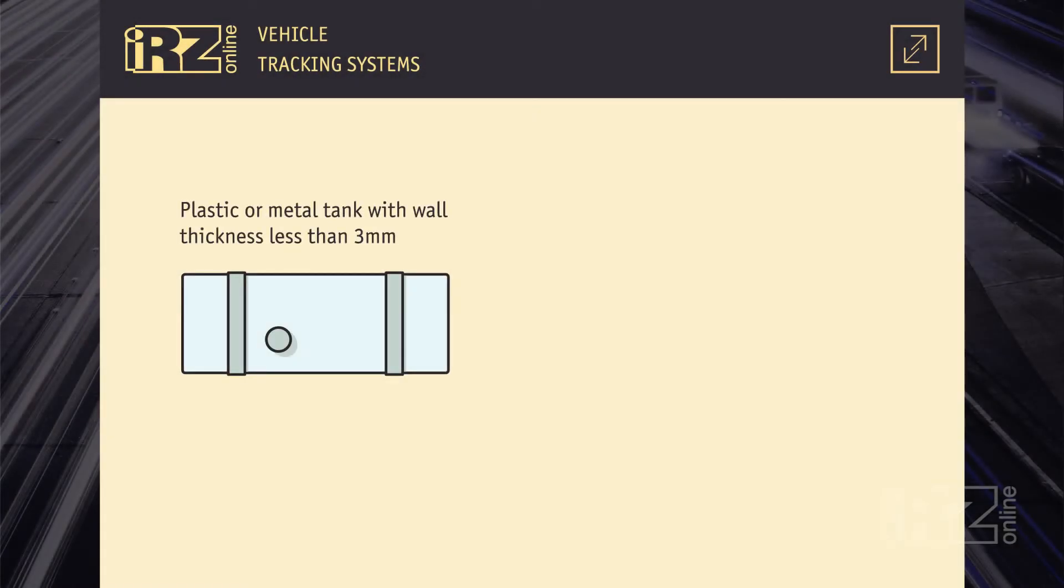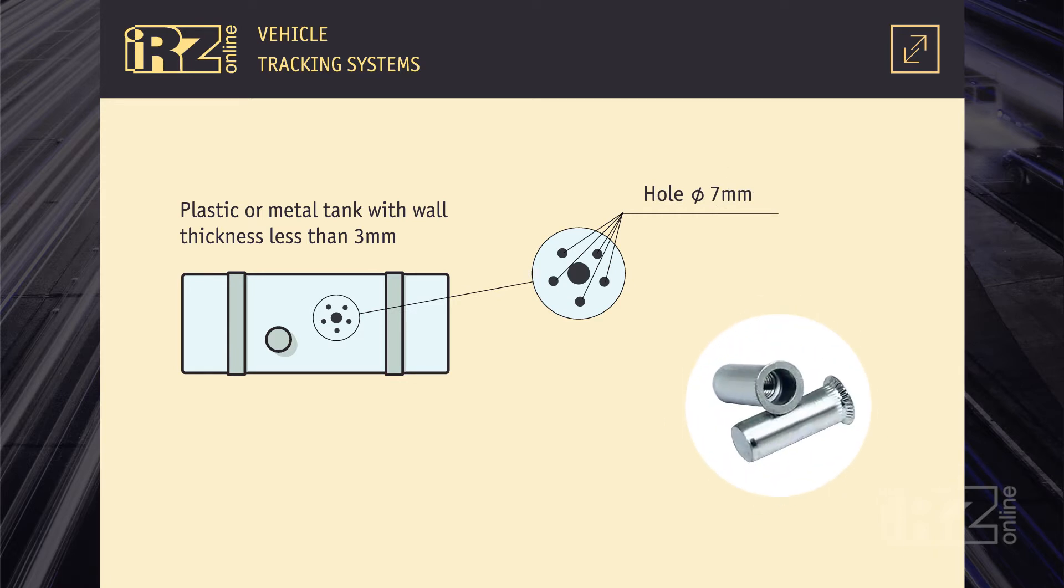For a metal tank with a thickness less than 3 mm or for a plastic tank, make the hole diameter of 7 mm and use the stack bolts supplied with the sensor. In our case, we use the stack bolts.